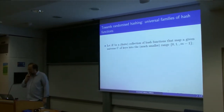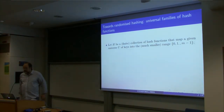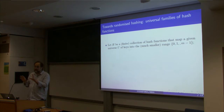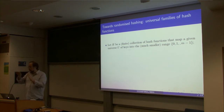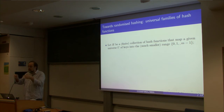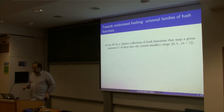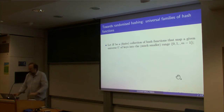We will look at universal families of hash functions and then see what we can do with them. When it comes to randomized hashing, once you pick your random hash function for the run of the program, you freeze it for the life of the hash table. Whatever you have to do, for as long as you need that particular hash table, you keep the same hash function, but each time you run the program it picks the hash function at random.